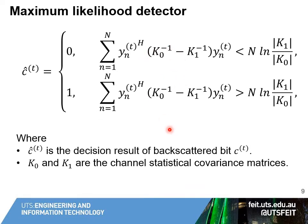For signal detection at the receiver, we use a maximum likelihood detector. Here are the conditions to detect bit 0 and bit 1, where K0 and K1 are the statistical covariance matrices. Using these two conditions, the receiver can detect bit 0 and bit 1 from the backscatter signal received.